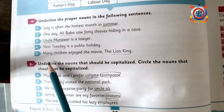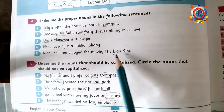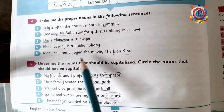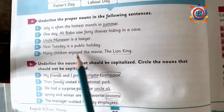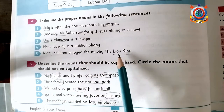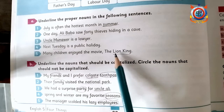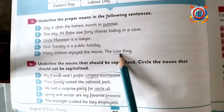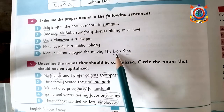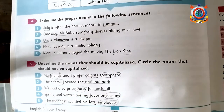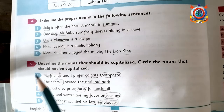Last sentence: 'Many children enjoyed the movie The Lion King.' Here there is a movie name — The Lion King. It is the name of a movie, so it is a proper noun. Lion King should be underlined. Now question number B.